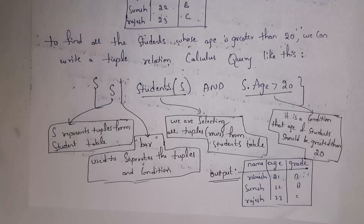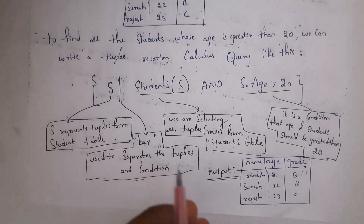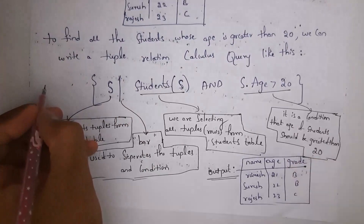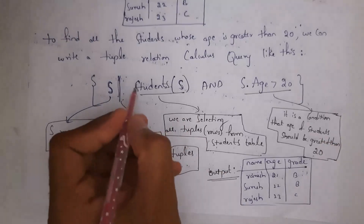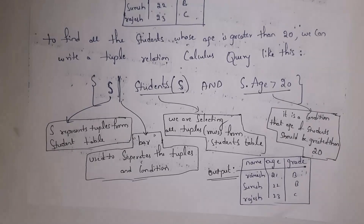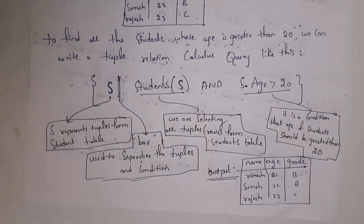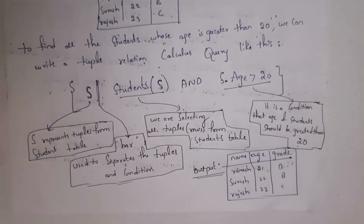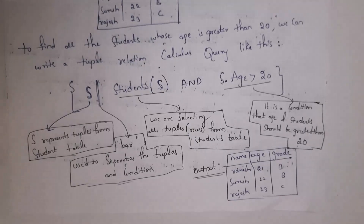This is the relational calculus query. Open curly braces; inside I have written S, where S represents selecting complete tuples — tuples are nothing but rows. Then a bar, then from which table we are selecting: students(S), where students is the table name. Now we give the condition — I want to select only tuples whose age is greater than 20, so I write S.age > 20. This will select complete tuples of students whose age is greater than 20. This is the output, and this is known as tuple relational calculus — use it when you want to select complete records from a table based on a certain condition.